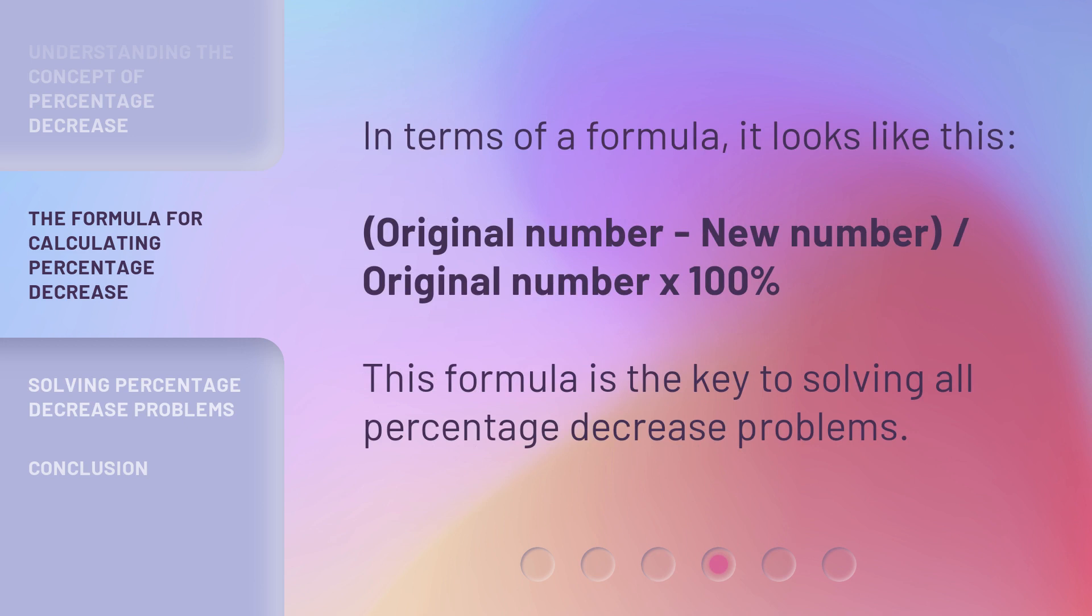In terms of a formula, it looks like this: (Original number - New number) / Original number × 100%. This formula is the key to solving all percentage decrease problems.